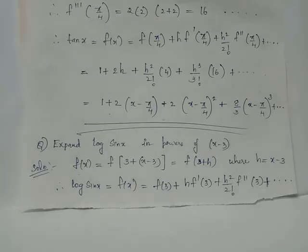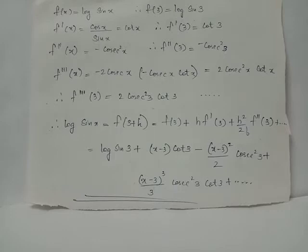Since f(x) = log sin x, we have f(3) = log sin 3. The derivative f'(x) = (1/sin x)·cos x = cot x, therefore f'(3) = cot 3. The second derivative f''(x) is the derivative of cot x, which is -cosec² x, therefore f''(3) = -cosec² 3.